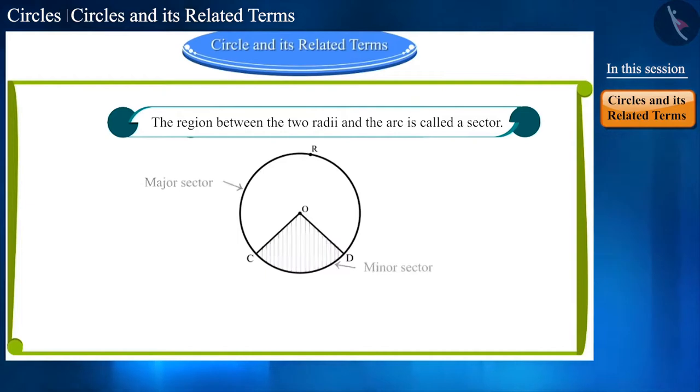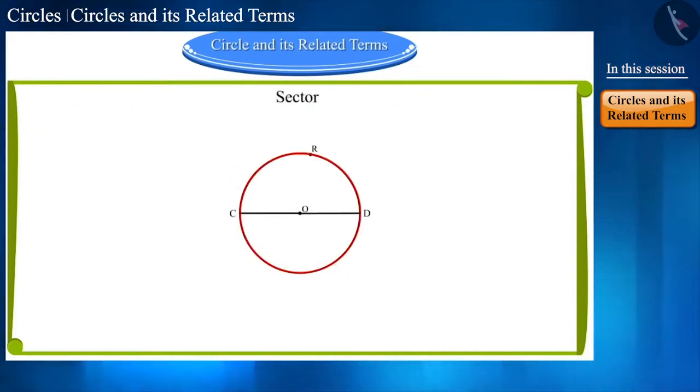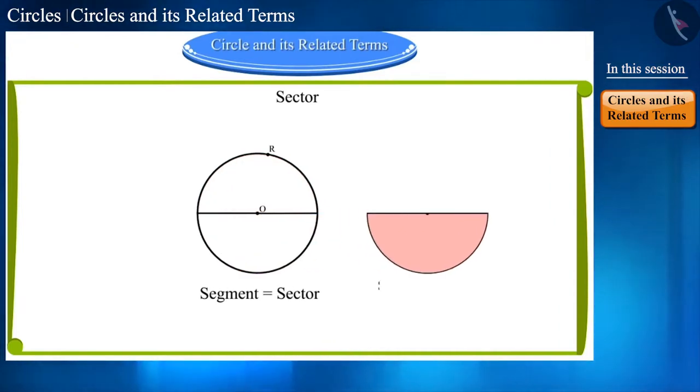But, when both these arcs become equal, then both the segments and both the sectors become equal. Now, what will we call this? Yes friends, this is a semicircle. And, this region is called the semicircular region.